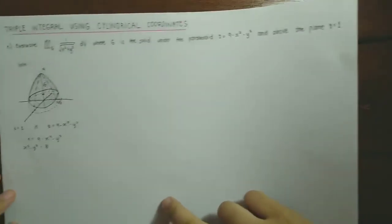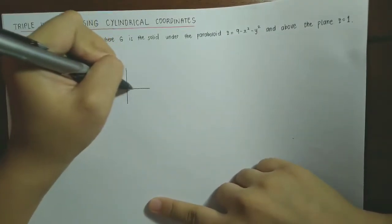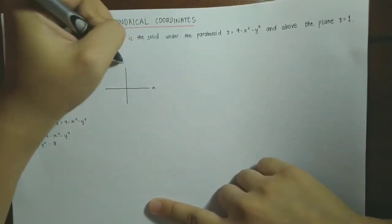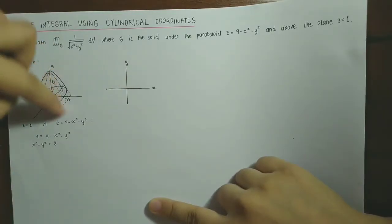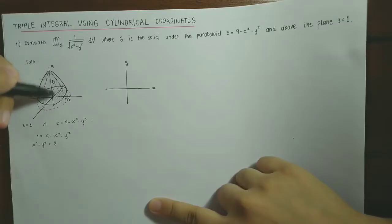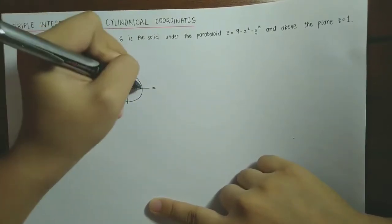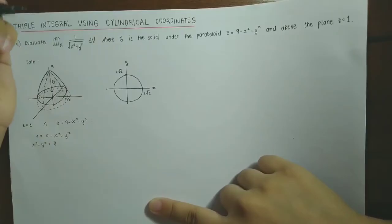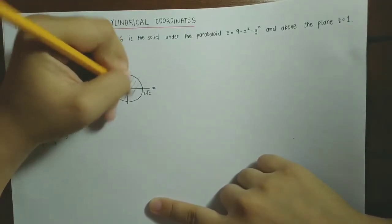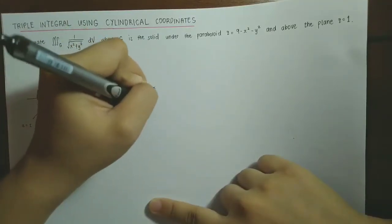Apart from the solid G, we also need to sketch the projection of G onto the xy-plane. The projection is simply the circle centered at the origin with radius 2√2. This is our projection of G onto the xy-plane.